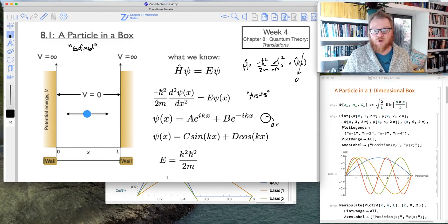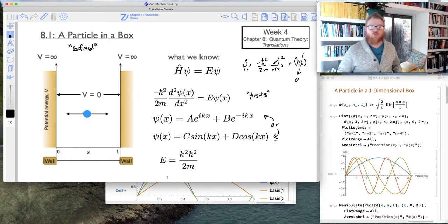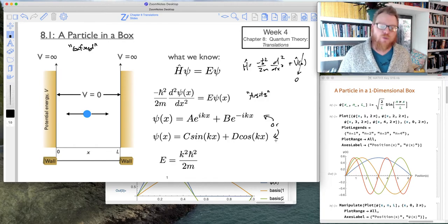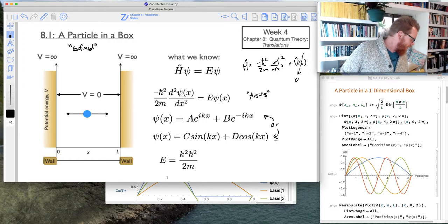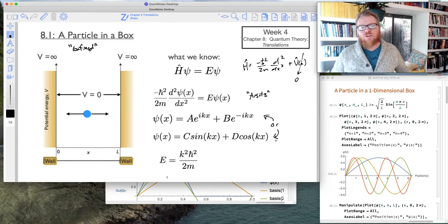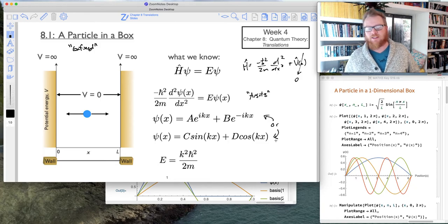Either of these are correct because we know that we can convert sines and cosines into e^(ikx) and e^(-ikx), and vice versa. So we can use either one of those solutions, and I'll show you which one we'll use as a matter of convenience.